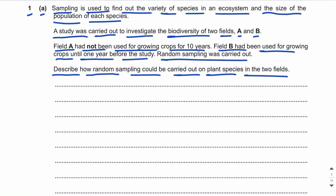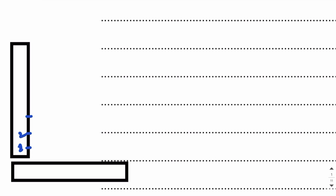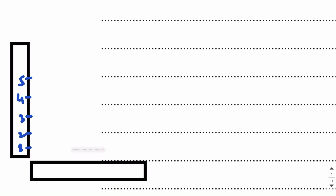Whenever we carry out sampling, we mark the area with measuring tapes. We mark the area with two measuring tapes — for example, this is the area marked with two measuring tapes. The measuring tapes would be in meters, so this is one meter, two meters, three meters, four meters, five meters, and so on. The measuring tapes could be 100 meters long.